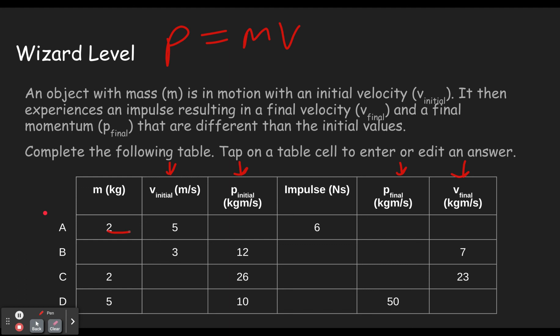So mass times velocity gives us the momentum initial. If it's going to change by 6, that means we're going to end up with 16. So now we have to be able to solve this equation for velocity. That would mean dividing both sides by mass. And so we get momentum over mass.